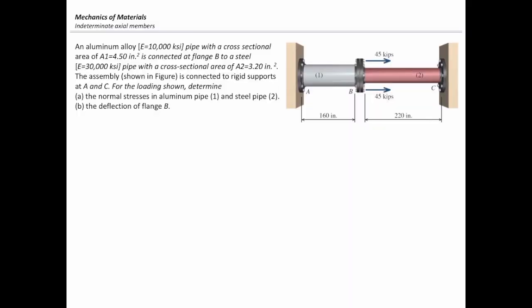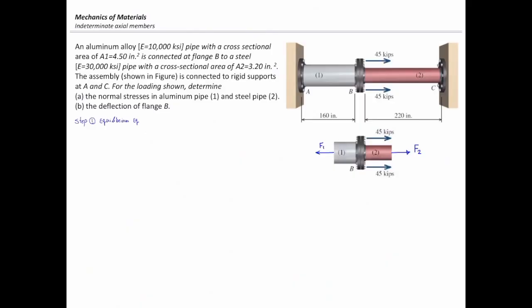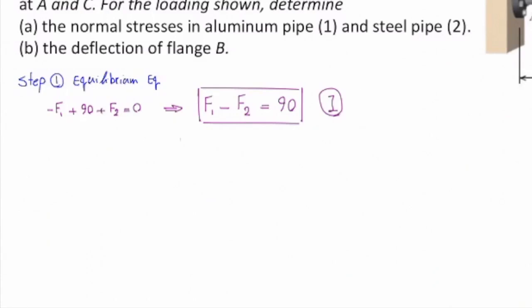The difficulty of this problem is that we can't determine the internal forces using equilibrium equations alone. Let me solve this step by step. Step one: we start from the free body diagram. The equilibrium equation gives us: negative F1 plus 90 plus F2 equals zero, or F1 minus F2 equals 90. As discussed, we can't determine these two unknowns from one equation.